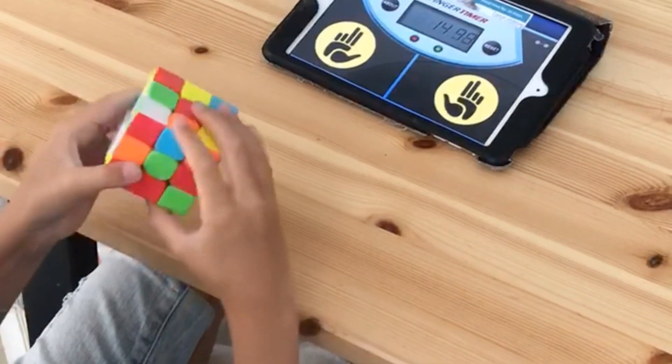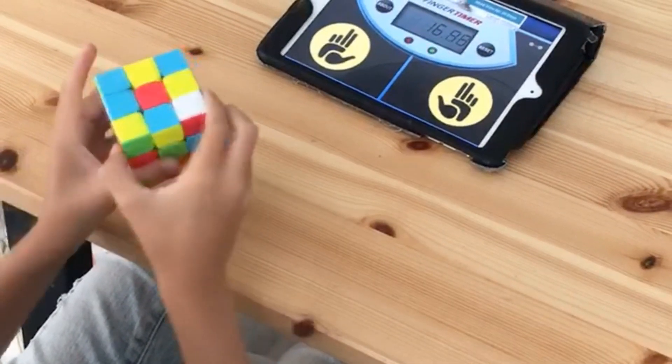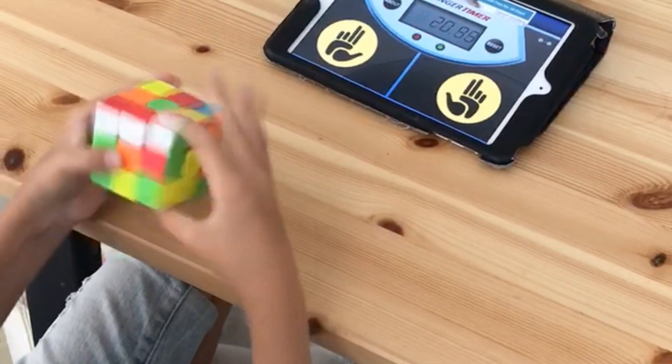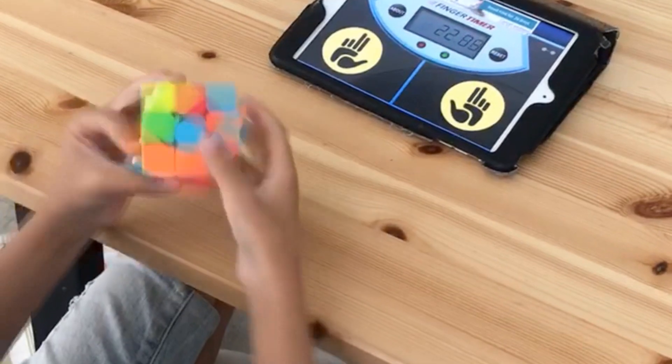With more than 43 quintillion combinations, most people have never solved the iconic Rubik's Cube. Ten-year-old Winkler resident Dawson Penner's record is 1 minute 14 seconds.